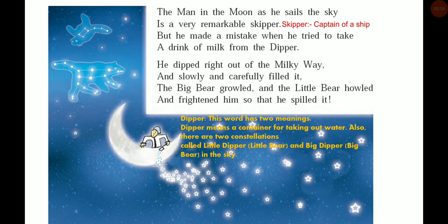So children, The Man in the Moon is a humorous and imaginary poem about a man who sails across the sky and reaches the moon. Like a good captain of a ship, the Man in the Moon too is remarkable as he continues to sail across the sky. But alas, he made a mistake. When and how?